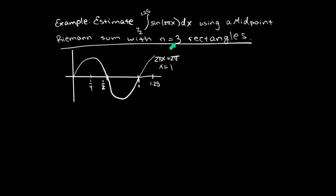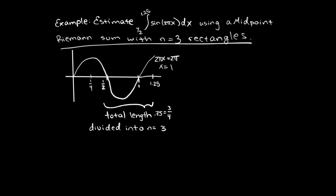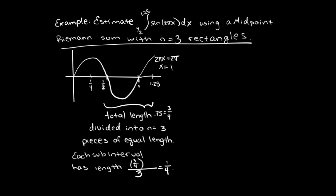We're going to subdivide the region from x equals one half up to x equals 1.25 into three evenly spaced rectangles. The total distance between one half and 1.25 is 0.75, or three fourths. We're going to divide that into three pieces, so each subinterval has length one fourth. Taking the leftmost value of one half and adding one fourth gives three fourths. Adding one fourth brings us to 1, and adding one fourth more brings us to 1.25. So we've got interval number 1, interval number 2, and interval number 3.